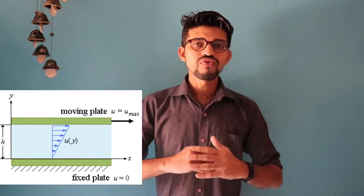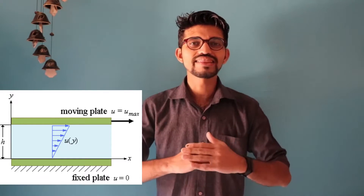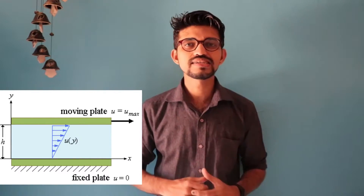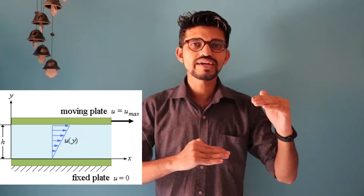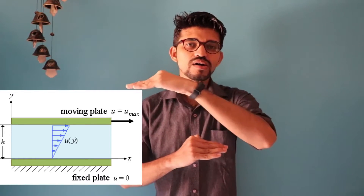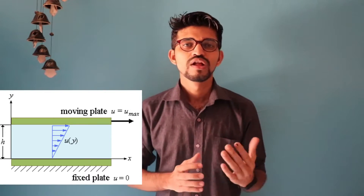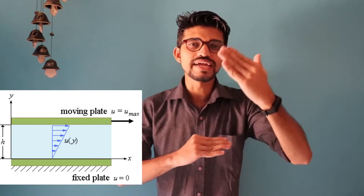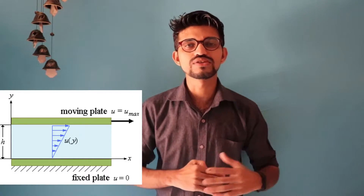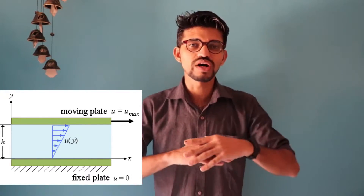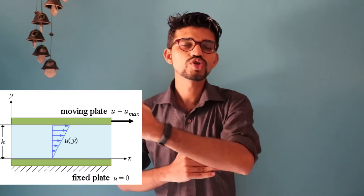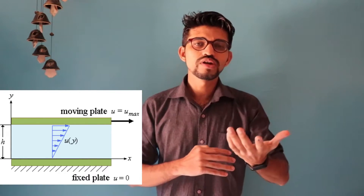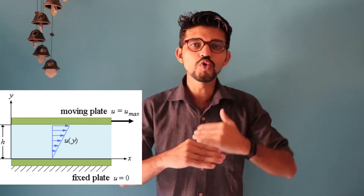Let us take one example. There are two plates having thickness T. The first plate is the stationary plate, and the second plate is at a distance H from the fixed plate and is in motion, moving forward. Between those two plates there is a fluid — let's say water is flowing between them. The distance between the plates is H.